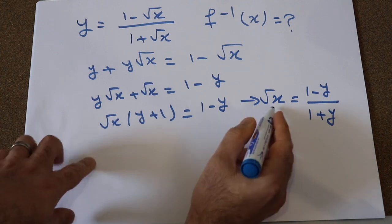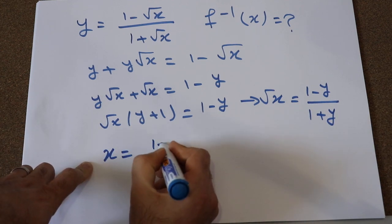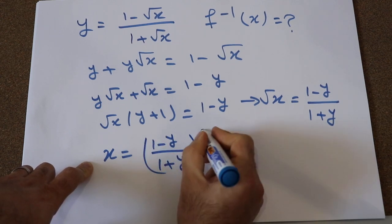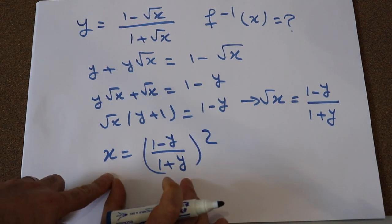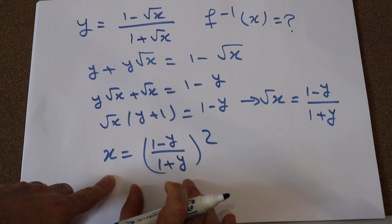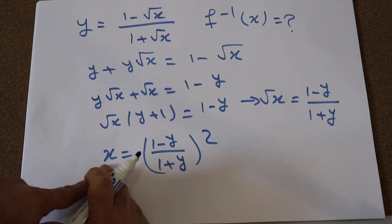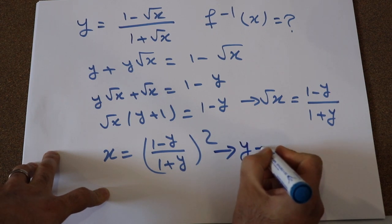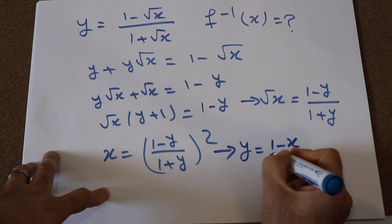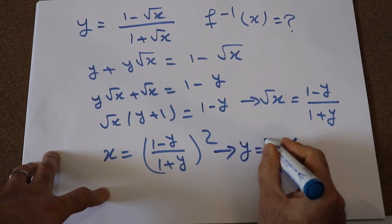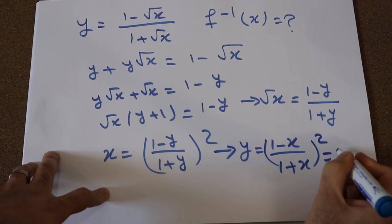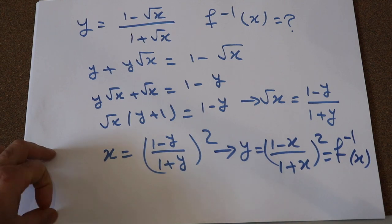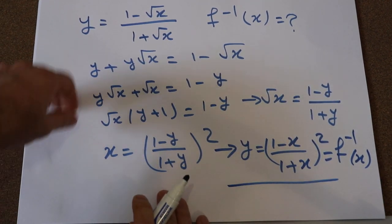From that, you can conclude that x equals [(1 minus y) divided by (1 plus y)]². That is the end of step one. Step two is to change x to y and y to x. Therefore, the inverse of the function is y equals [(1 minus x) divided by (1 plus x)]². That is the solution.